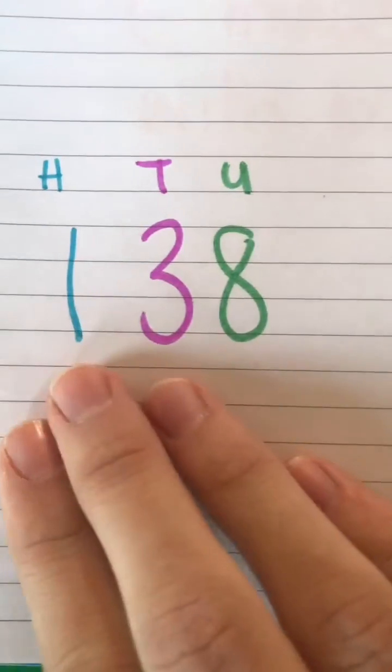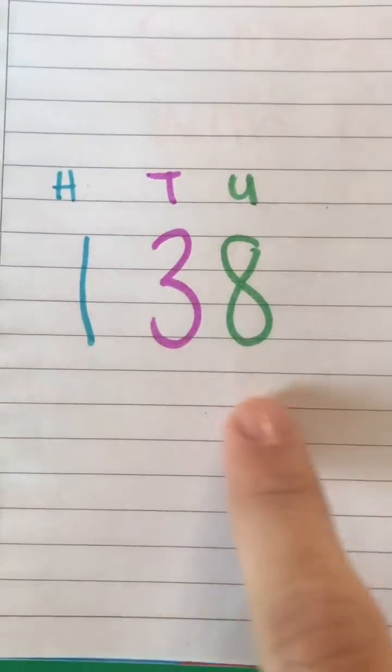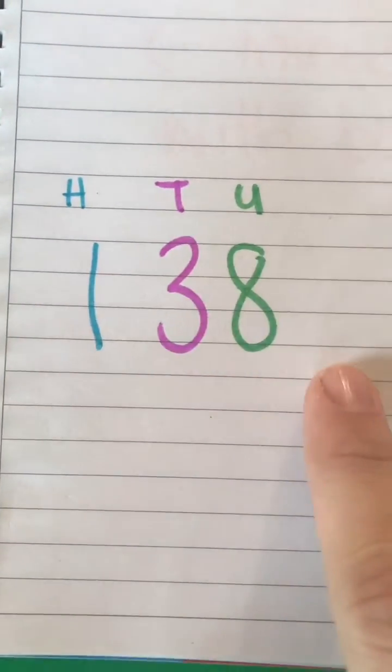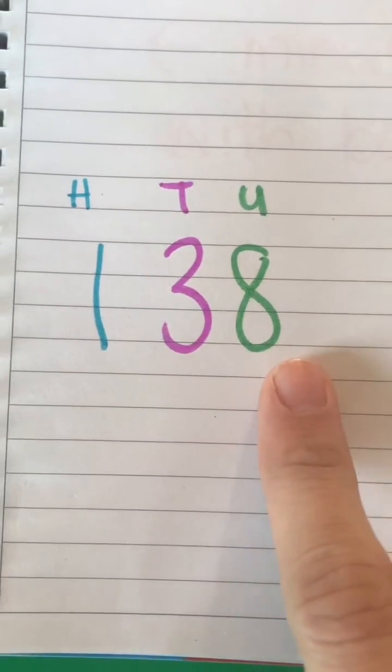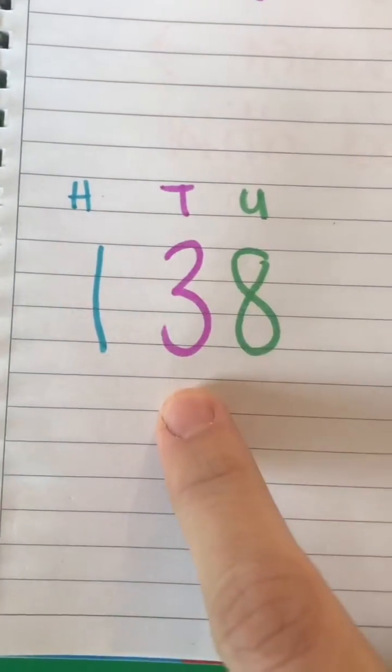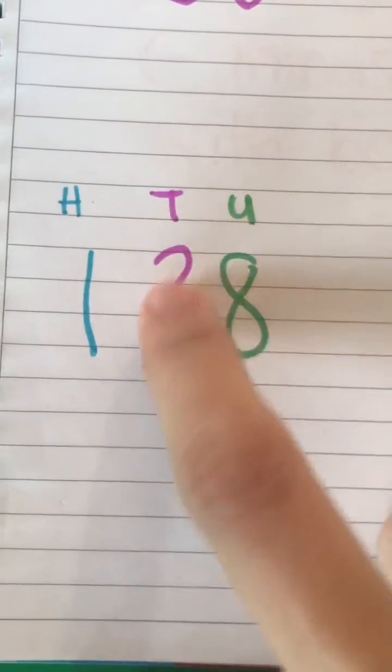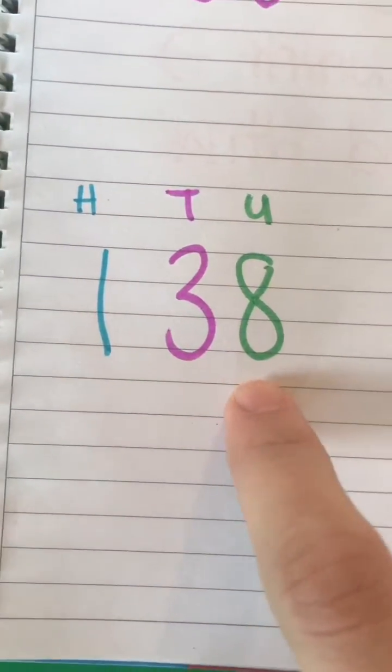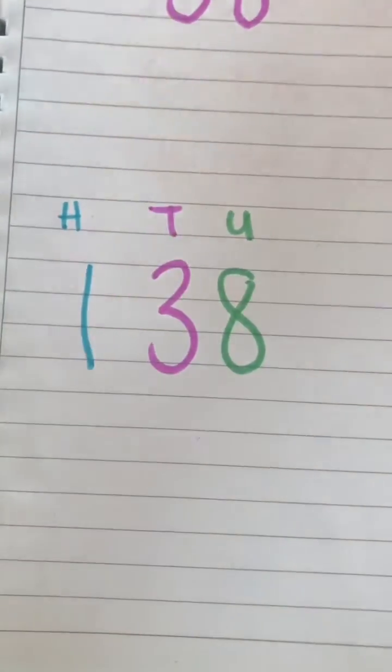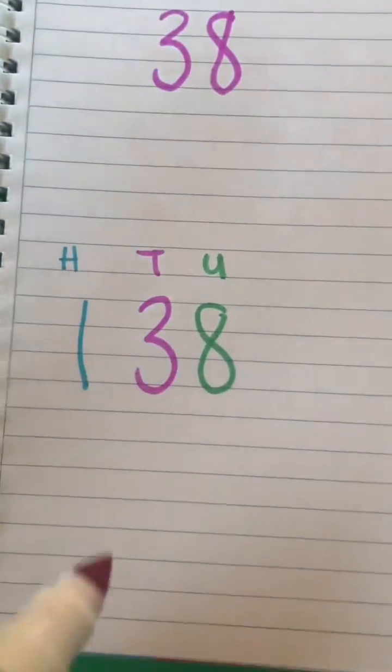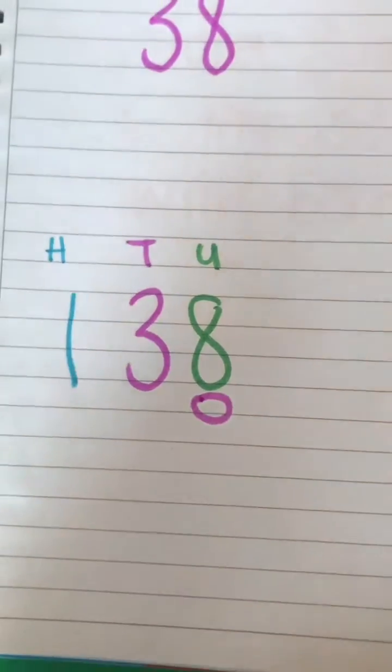us of place value in our numbers. So when we've got a number that looks like this, it's got a hundred, a ten, and a unit. So 138—we need to remember that this 3 over here doesn't stand for 3, because it's in the tens column. It's actually 30. It's like there's a little zero hiding behind this number.